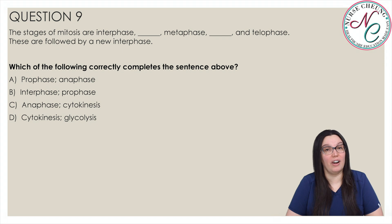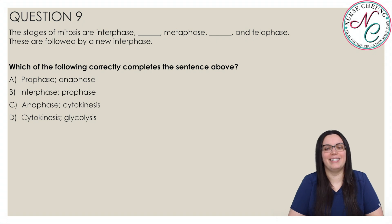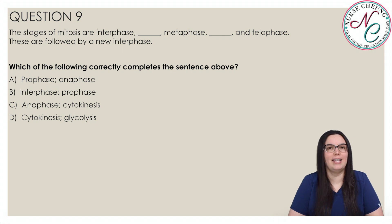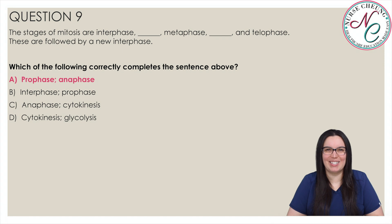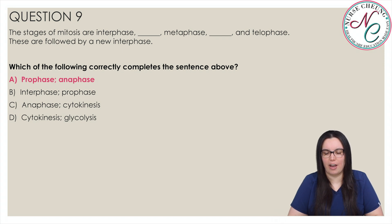The stages of mitosis are interphase, blank, metaphase, blank, and telophase, followed by a new interphase. Which of the following correctly completes the sentence? Is it A, prophase, anaphase; B, interphase, prophase; C, anaphase, cytokinesis; or D, cytokinesis, glycolysis? The correct answer is A, prophase, anaphase. The four stages of mitosis in order are prophase, metaphase, anaphase, and telophase. Cytokinesis happens after the mitotic cycle, while glycolysis takes place during cellular respiration.